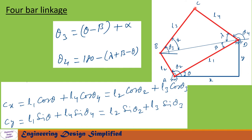Similarly, the Y component: Cy equals L1·sin(theta), that is this height, plus L4·sin(theta 4), the vertical component of L4. This equals L2·sin(theta 2), the vertical component of L2, plus L3·sin(theta 3), the vertical component of L3. So Cy: L1·sin(theta) plus L4·sin(theta 4) equals L2·sin(theta 2) plus L3·sin(theta 3).